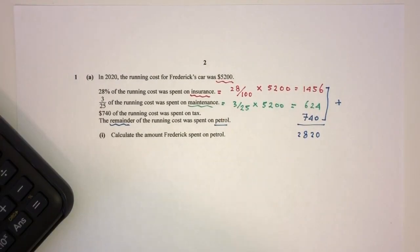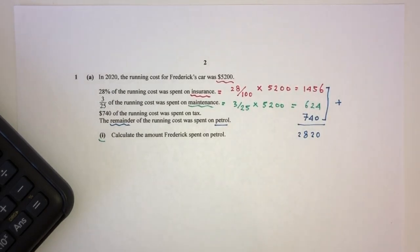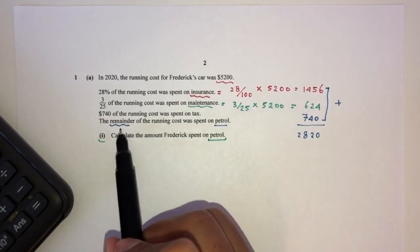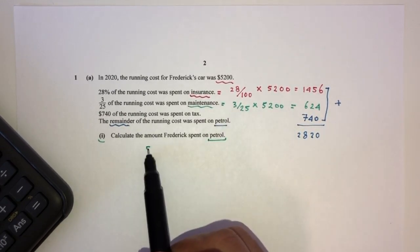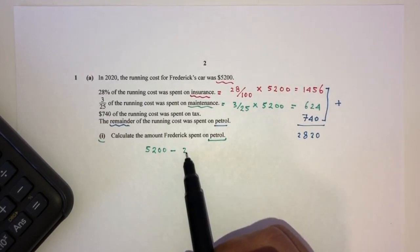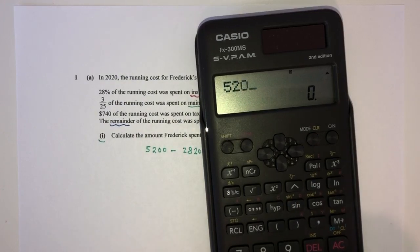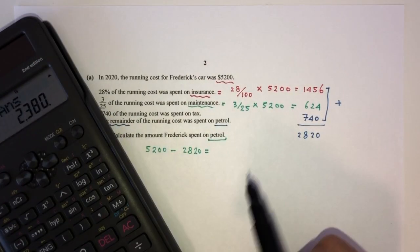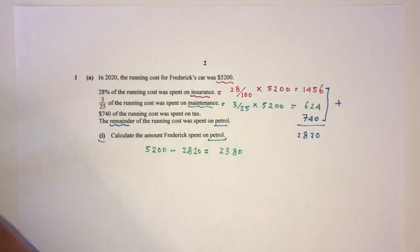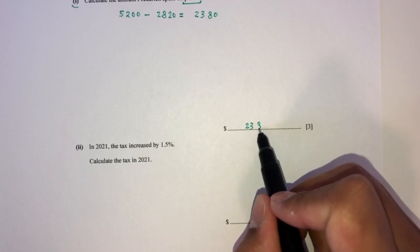So question part one asks us to find the amount he spent on petrol. The petrol was the remainder, so we take 5200 minus 2820, which gives 2380 as your answer for part one. This is the amount he spent on petrol.